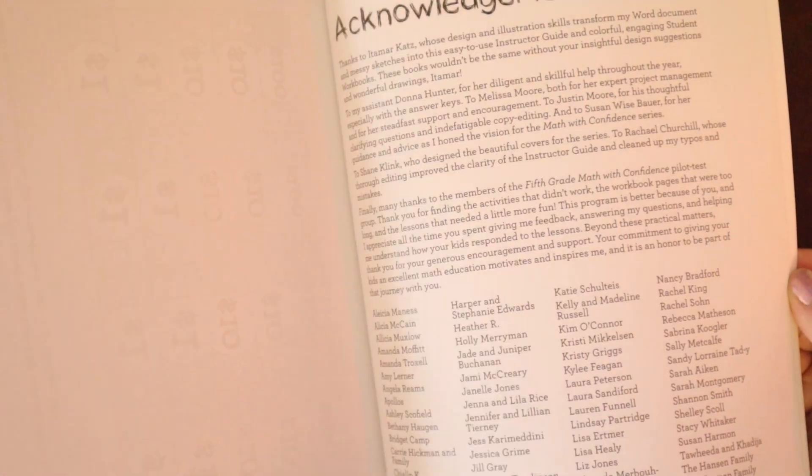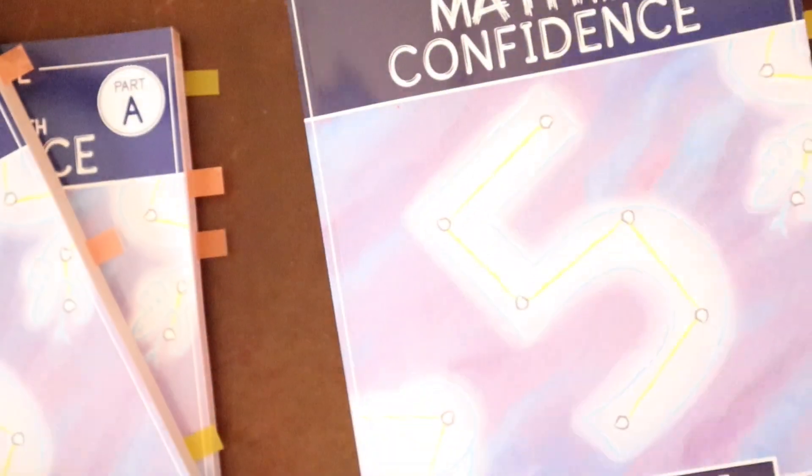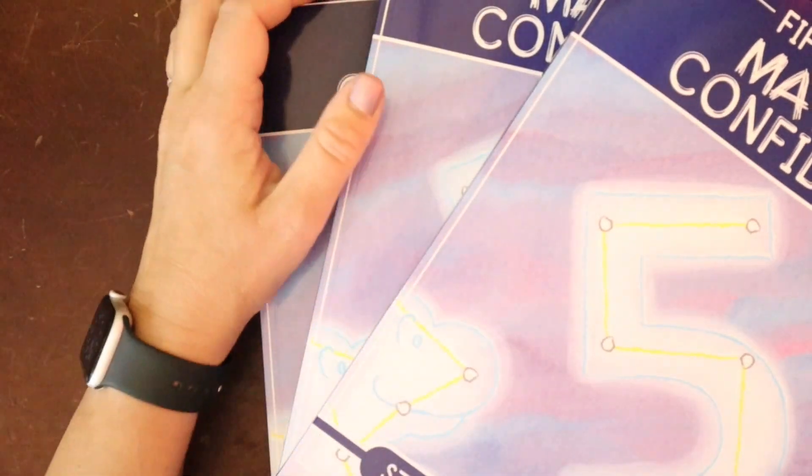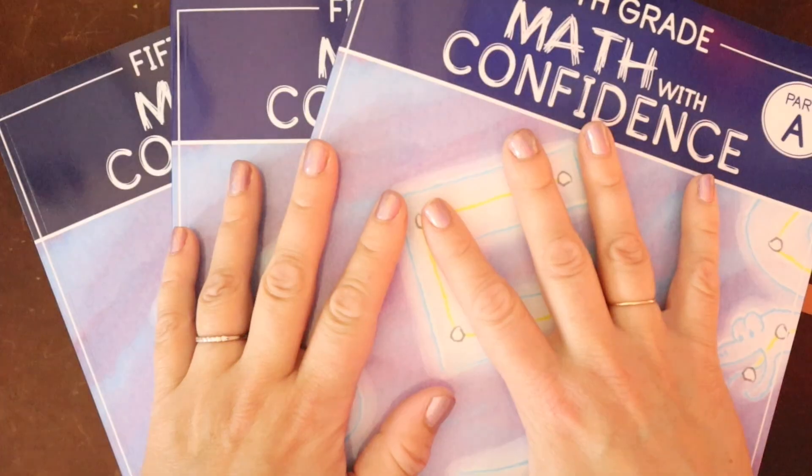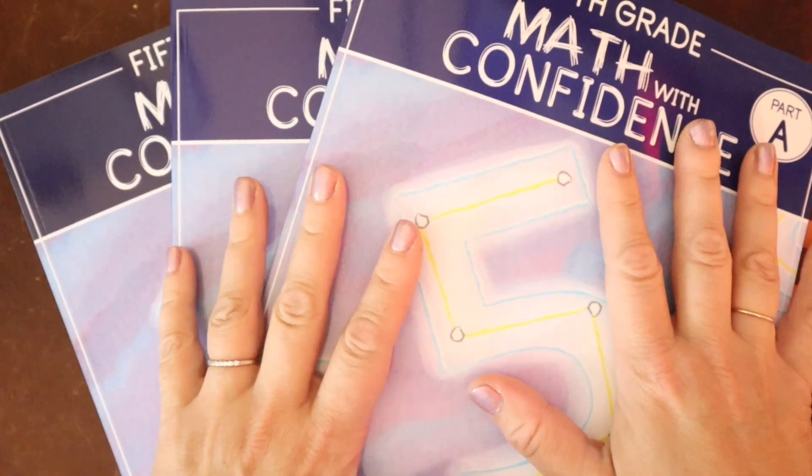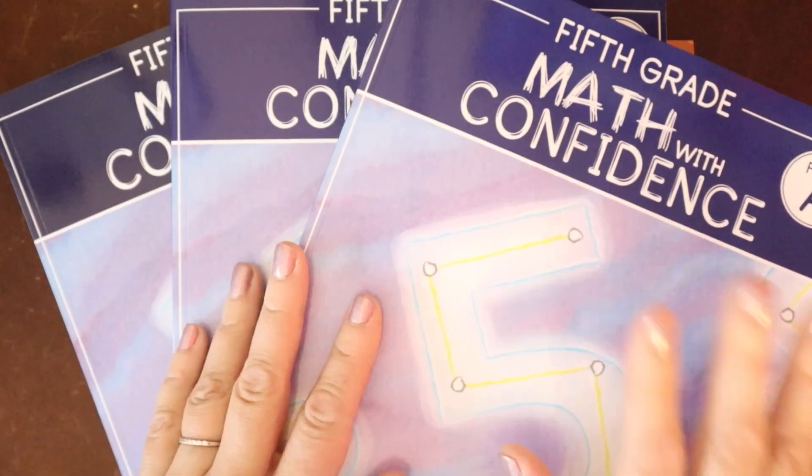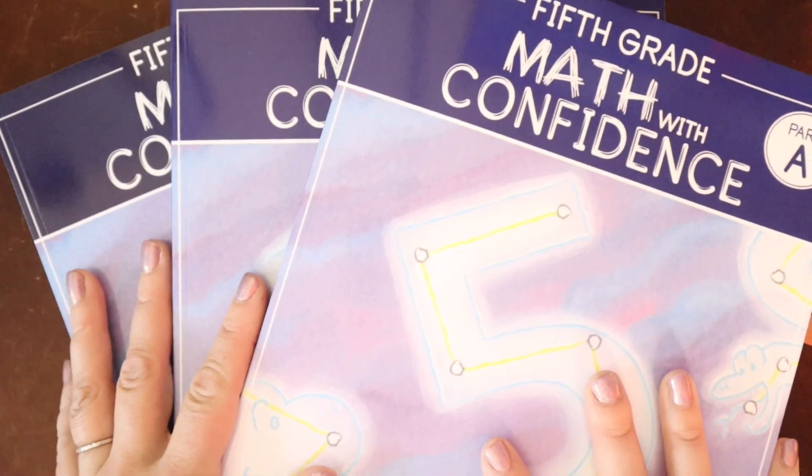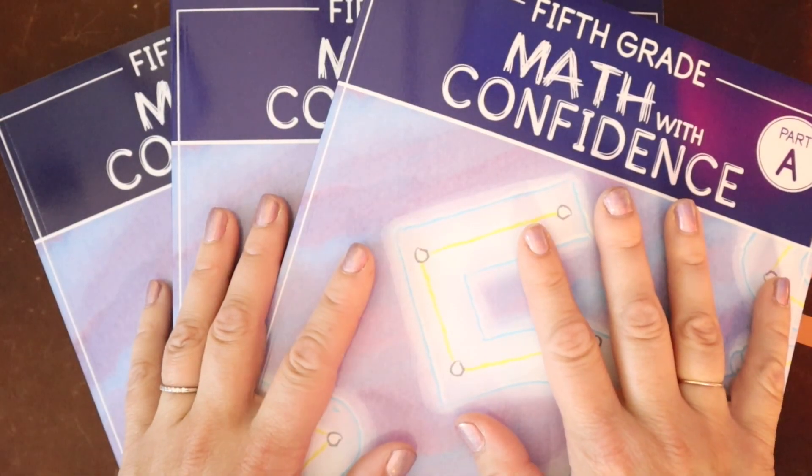So that is a quick look inside the new Math with Confidence Level 5. If you have questions about Math with Confidence, if you want to see how we're using Math with Confidence, head on over to my Instagram account, homespun.childhood, and I have a math highlight there. You can drop questions below. I also have blog posts on all the different levels. So if you found this video helpful, please hit that like button and definitely subscribe for future videos. Bye y'all.